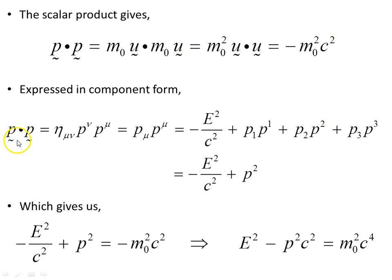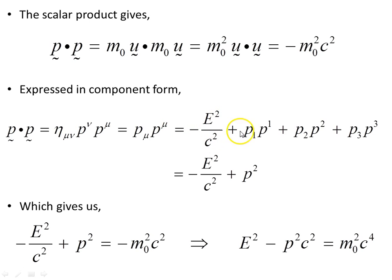Expressed in component form with the Minkowski metric η^{μν}, we get E²/c² minus the spatial components dotted together, which can be expressed as minus E²/c² plus p².